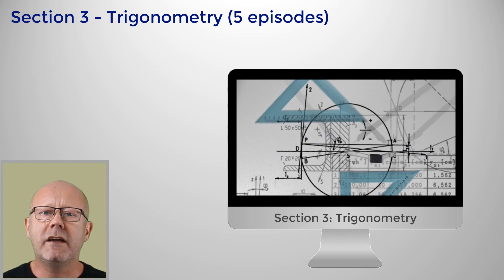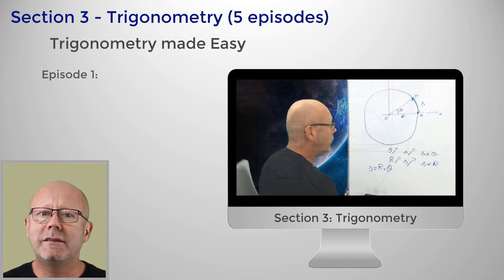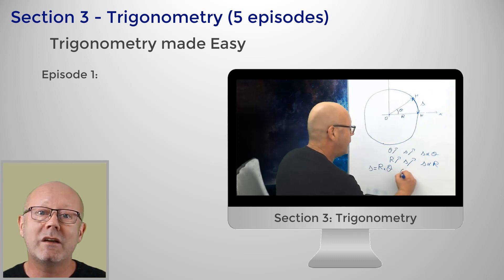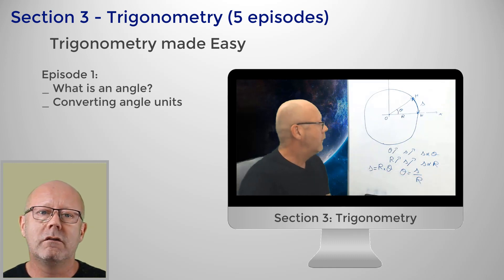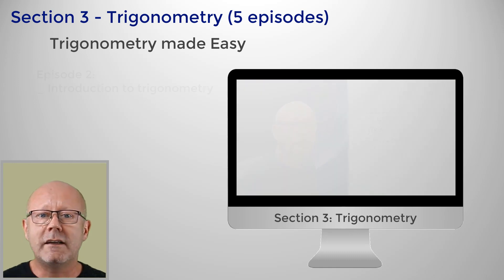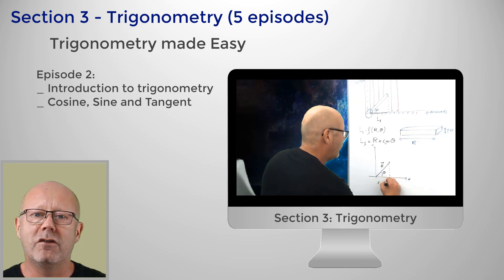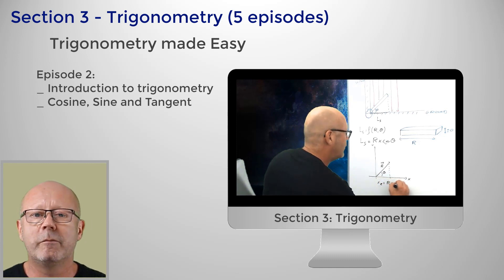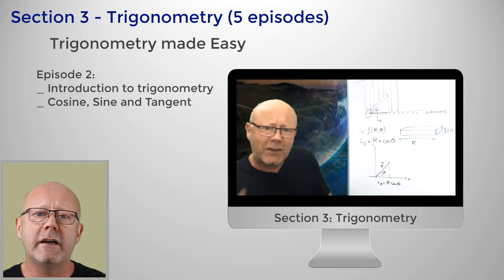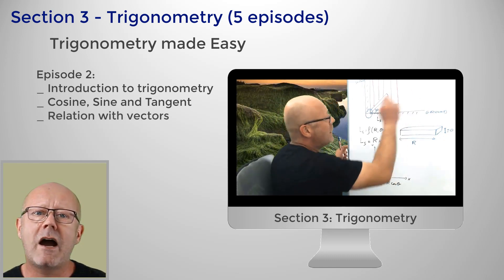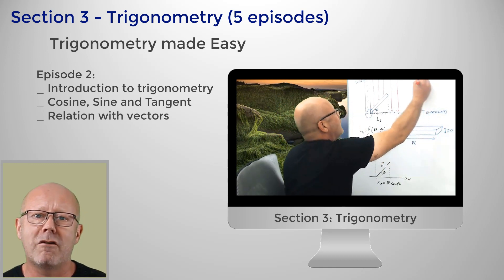The trigonometry section is composed of five episodes. In the first one, we start from the beginning by defining what an angle is and how to convert and manipulate angles. The second video is an introduction to trigonometry: what is a cosine, what is a sine, what is a tangent, and how to use these. This episode links these notions to the coordinates of a vector, and you will see how everything starts to make sense — all pieces matching each other like a puzzle.